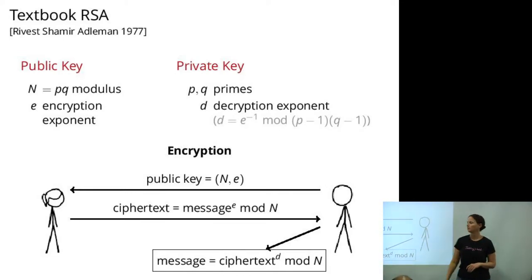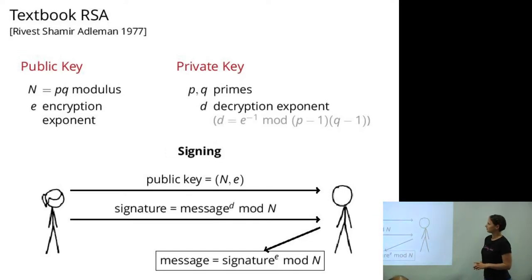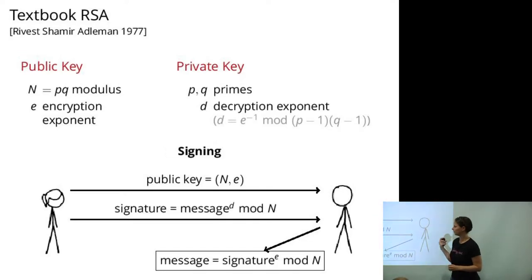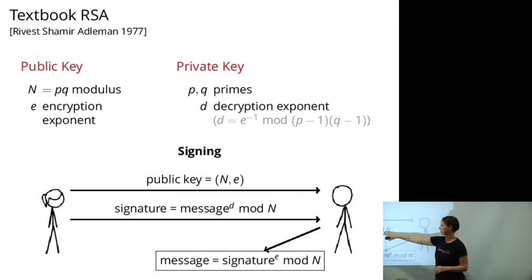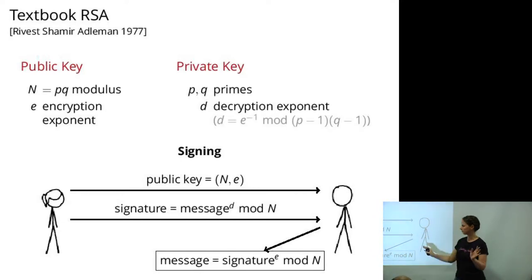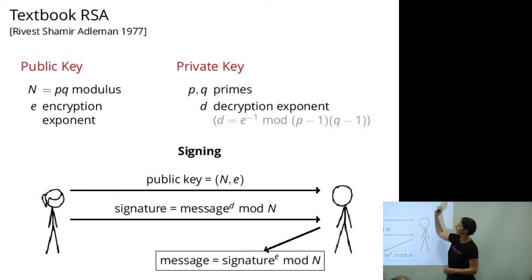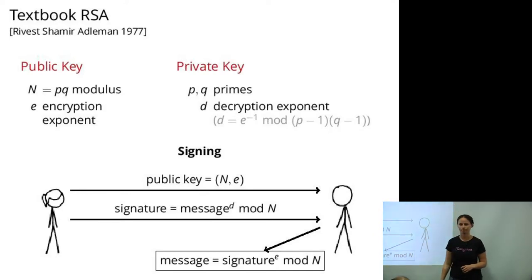For encryption, if Alice wants to encrypt to Bob, Bob sends his public key N and E. The encryption of a message is the message padded properly, raised to the E power mod N. The only relevant part here is that the factorization of N gives you the private key D, because if you know P and Q and E, you just compute E inverse mod (P-1)(Q-1). Anyone with the factorization of N knows D and can forge a signature.